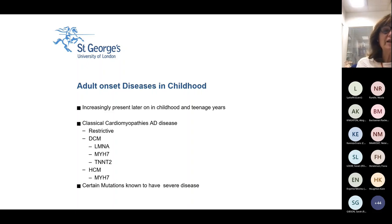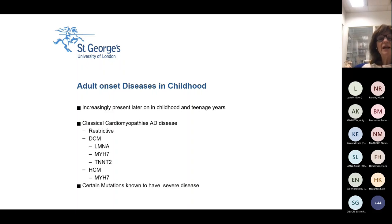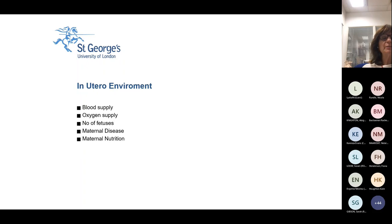By the familial ones, I'm talking about the autosomal dominant diseases that our adult colleagues are so familiar with — things like lamin mutations, MYH7, TNNT2, and with HOCM, MYH7. These can present throughout childhood but become more common later on, as we see with adult diseases.